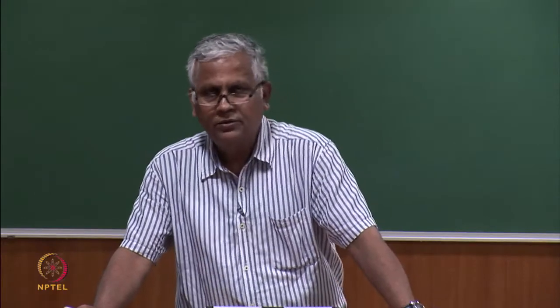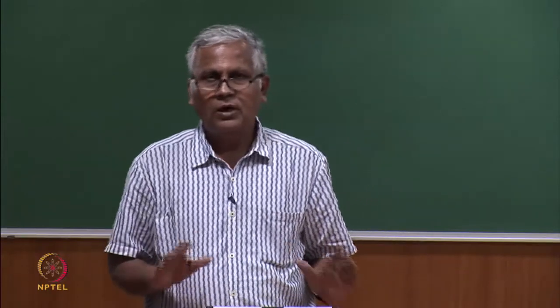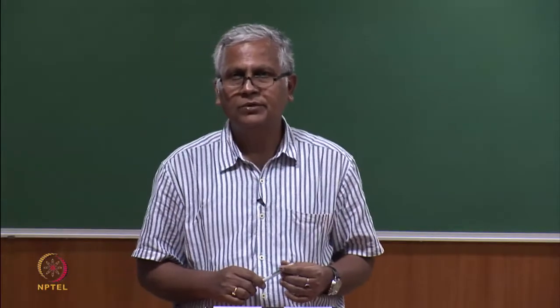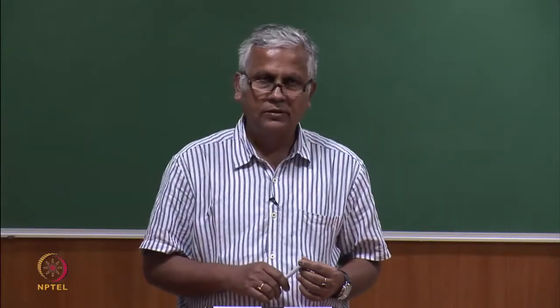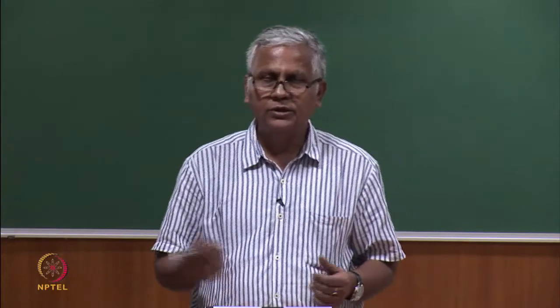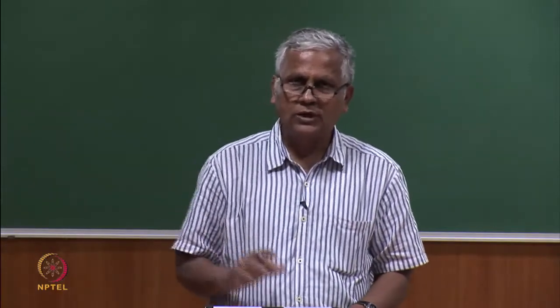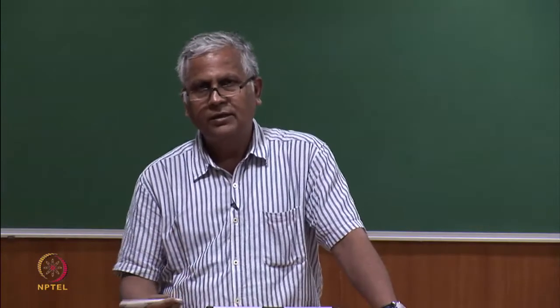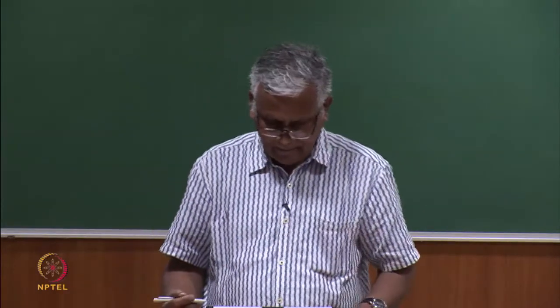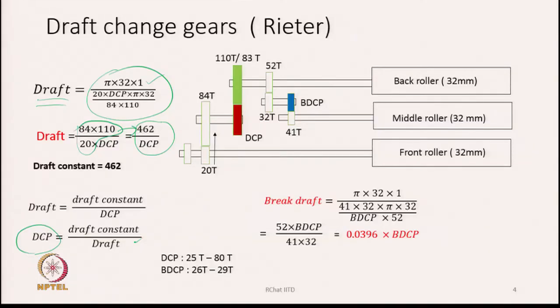This gear therefore will only change the draft between front and middle, not the draft between middle and back, which we call break draft. Break draft is quite sensitive to the quality of roving, so many times when total draft has to be changed, we do not touch the break draft but increase or decrease the draft in the front zone — that is the usual practice. If we need to change the break draft, we concentrate only on those gears connecting the back and middle roller.